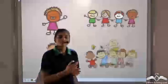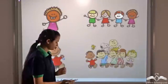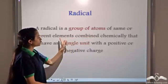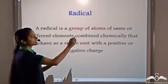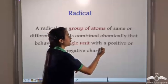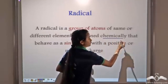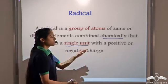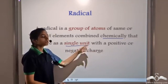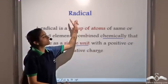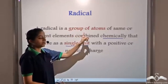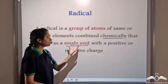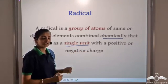Similarly, in chemistry, some atoms act in a group. They form a group that can have atoms of the same or different elements, and they are combined chemically. That group of atoms then acts as a single unit with a positive or negative charge. Such a group of atoms is known as a radical. So a radical is a group of atoms of same or different elements combined chemically that acts as a single unit with a positive or negative charge.